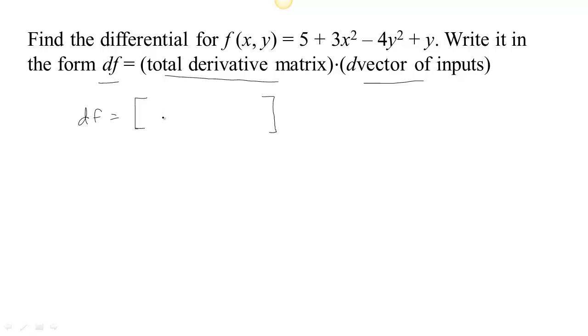The rate of change of this function in the direction of x would be 6x. That goes in the first entry, and in the second entry we have the rate of change with respect to y, which is going to be negative 8y plus 1.